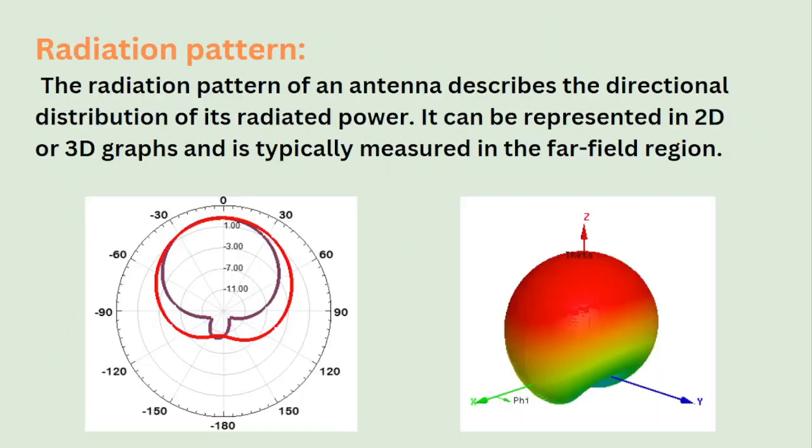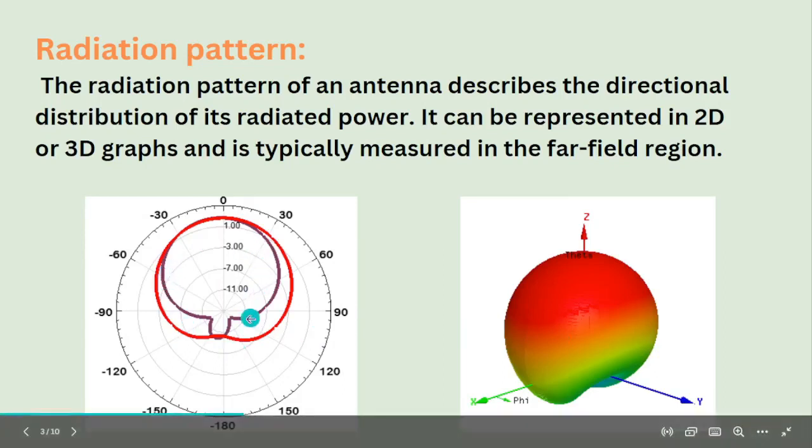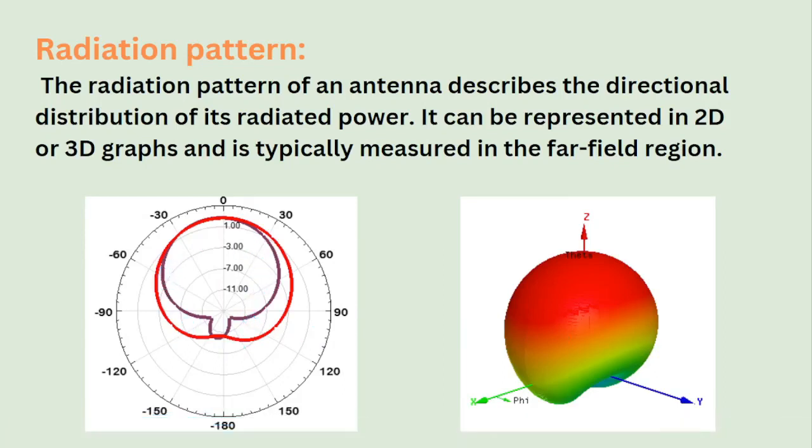Now let us look at radiation pattern. The radiation pattern of an antenna describes the directional distribution of its radiative power. It can be represented as either 2D or 3D graphs and is typically measured in the far field region. The first graph here shows a 2D radiation pattern which depicts the E-plane and H-plane pattern of a specific antenna. The next one is a 3D radiation pattern which covers the entire 360 degrees of radiations.